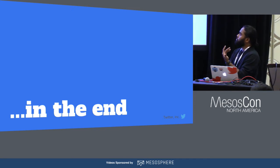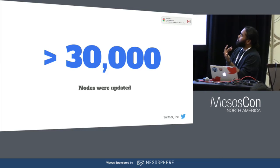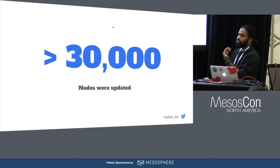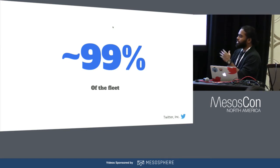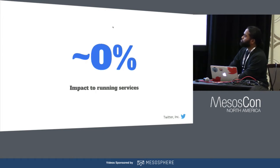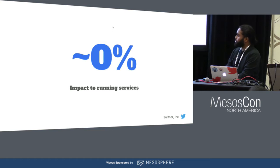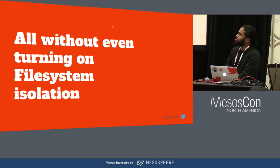In the end, we ended up actually upgrading all of our hosts — upwards of 30,000 hosts — which corresponded to almost 99% of our fleet. The remaining 1% was due to some Snowflake services which had very tight coupling that had to be handled and special-cased. We did all this with very minimal or zero impact to any of our running services, and all of this we did without even turning on file system isolation.